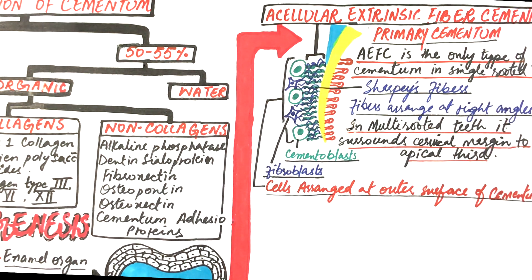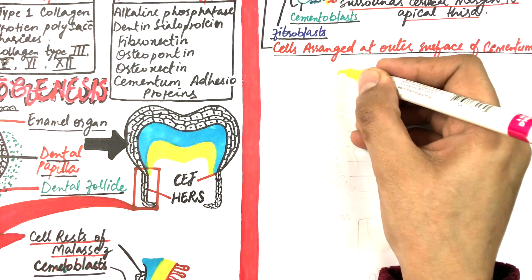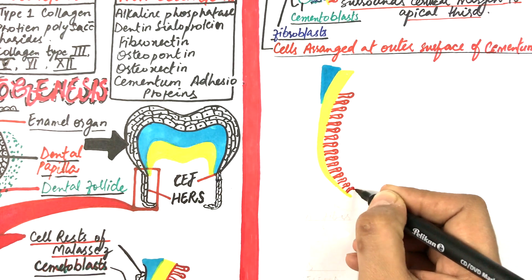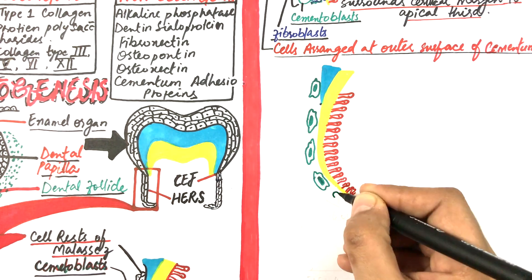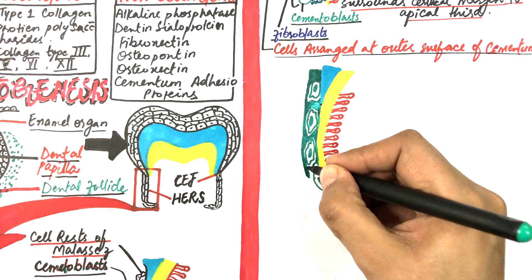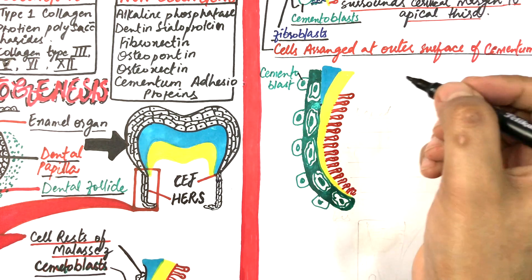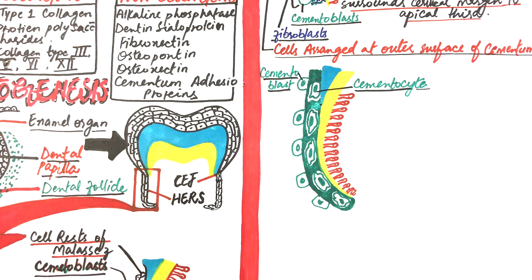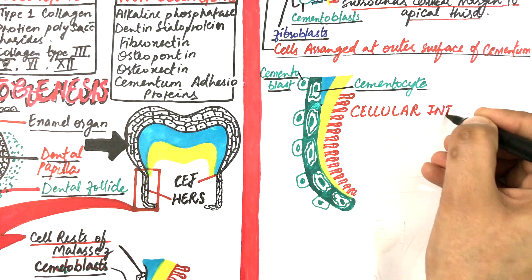After the formation of acellular extrinsic fiber cementum, a much less mineralized cementum forms at the apical third called cellular cementum. The cementoblasts secrete the ground substance of the cementoid to form intrinsic fibers. Deposition of organic matrix occurs at a much faster rate, resulting in entrapment of cementoblasts within their own produced spaces called lacunae. The cementoblasts persist within these cavities as cementocytes. That is why this cementum is called cellular cementum, and since it is associated with its own intrinsic fibers rather than PDL fibers, it is termed cellular intrinsic fiber cementum.